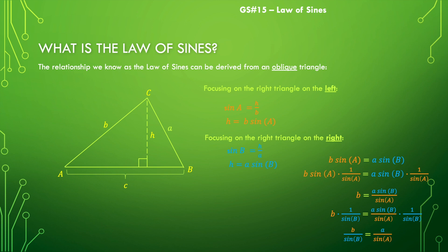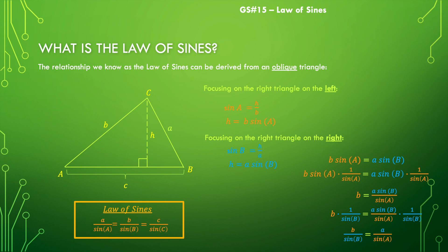What about angle C and side C? Well, if I flip this triangle around and look at it in another orientation, I can get the same relationship happening there. And that leads us to what is known as the law of sines, which says that those pairs are proportional: the length of side A over the sine of angle A equals the side length of B over the sine of angle B, which also equals the side length of C over the sine of angle C.